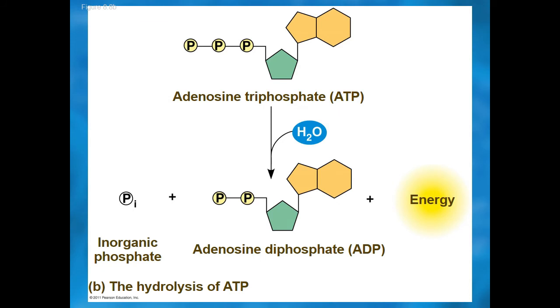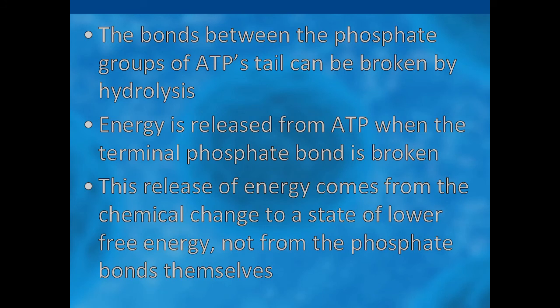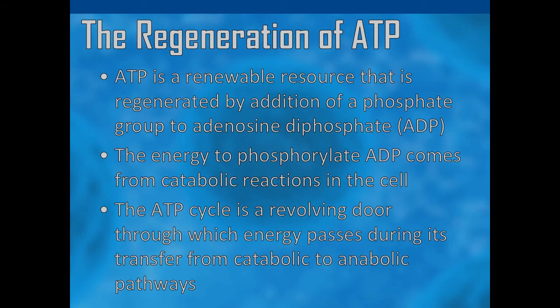ATP captures chemical energy obtained from the breakdown of food molecules and releases it to fuel other cellular processes. It does so during the hydrolysis of ATP — during hydrolysis, ATP reacts with water, resulting in the detachment of one inorganic phosphate, adenosine diphosphate (ADP), and a release of energy. ATP hydrolysis is the catabolic reaction process by which chemical energy stored in the high-energy phosphoanhydride bonds in ATP is released by splitting these bonds, producing work such as mechanical energy in muscles. Given that this is a cyclical process, ATP is considered a renewable energy source. In regeneration of ATP, creatine phosphate transfers a high-energy phosphate to ADP, producing ATP and creatine.